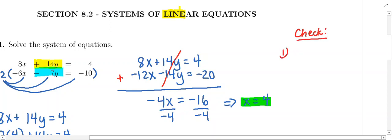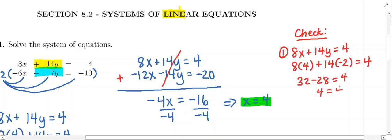On this first equation, I've got 8x plus 14y equals 4. Let's substitute 4 for x and negative 2 for y and see if we get something true. This is going to be 32 minus 28. Does that equal 4? Yes, it does. We get a true statement. 4 equals 4.